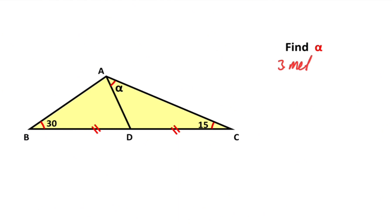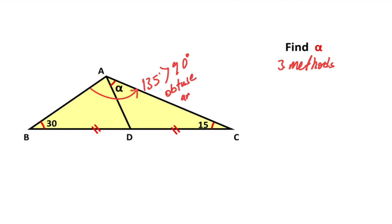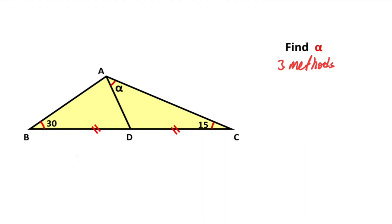Now let's calculate the value of alpha using the third method. We know that in a triangle the sum of interior angles equals 180 degrees, so 135 degrees is left here. Since 135 degrees is greater than 90 degrees, it means angle BAC is an obtuse angle.